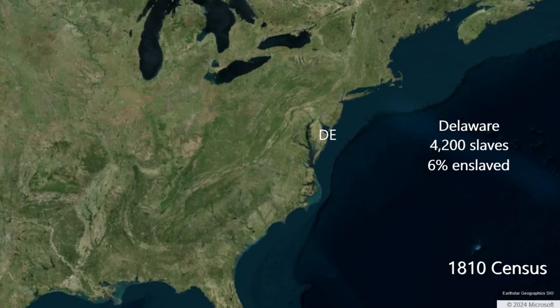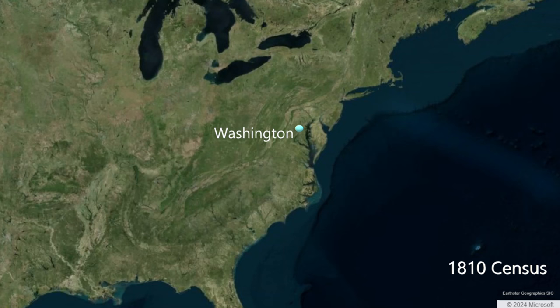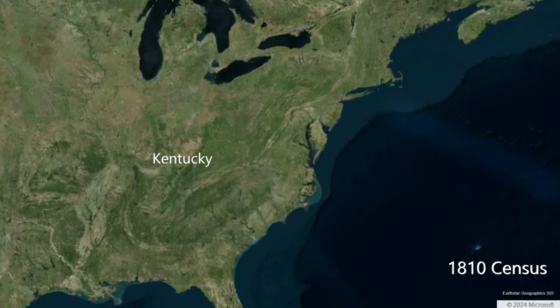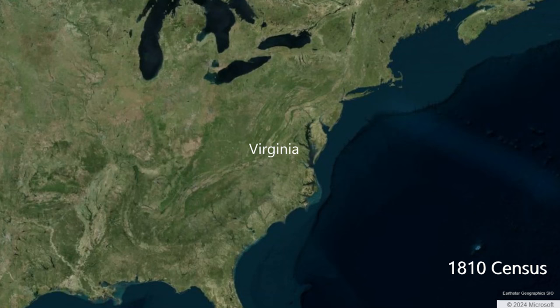Delaware has 13,100 freemen in 1810. The nation's capital, the District of Columbia, had 3,500 slaves in 1810, with about 1 in 4 residents enslaved. Kentucky had 80,500 slaves, or about 20% of its population — about half the percentage of cash crop states. Virginia, the most populous state, had 394,000 slaves in 1810, the most of any state in the Union. 40% of Virginia's population was enslaved at this time.